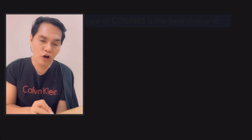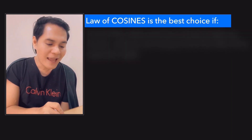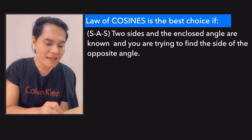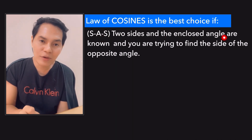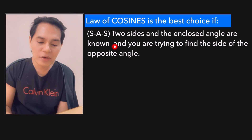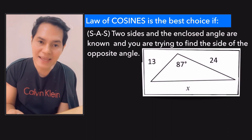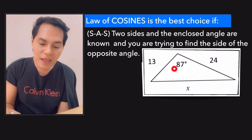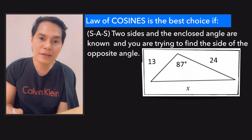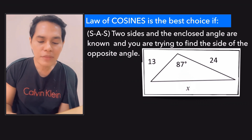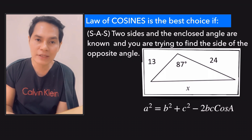Here's another condition for the law of cosines: SAS — side-angle-side — meaning two sides and the included angle are known. Look at this illustration: you have the side-angle-side condition where this is the included angle, and you are trying to find the side opposite that angle. The best law to apply here is the law of cosines.